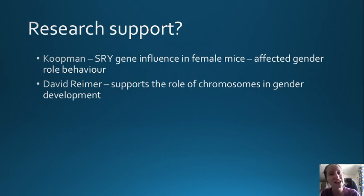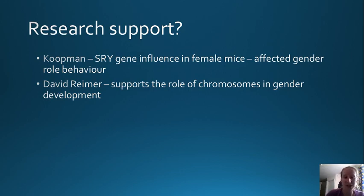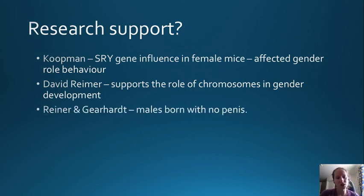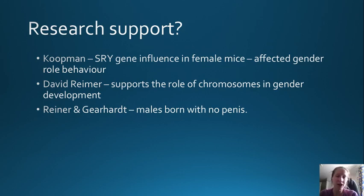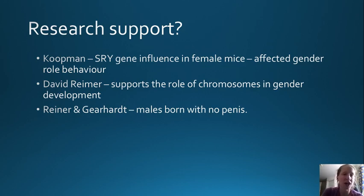This suggests that David's gender role was determined by his genes and not by the way he was raised, because his parents had made every effort to raise him as a girl and yet he still ended up reverting to being a boy. Another study by Reiner and Gearhart looked at 16 genetic males born without penises. Of those, 14 were raised as female, but a very large proportion - eight of them - decided by age 16 that they were going to have gender reassignment and become male.